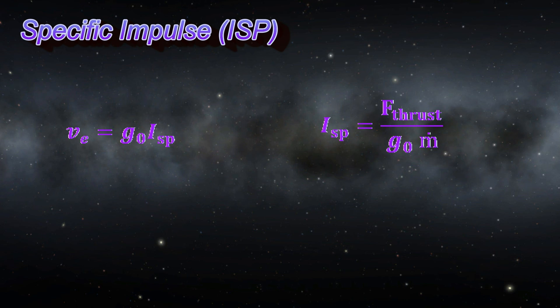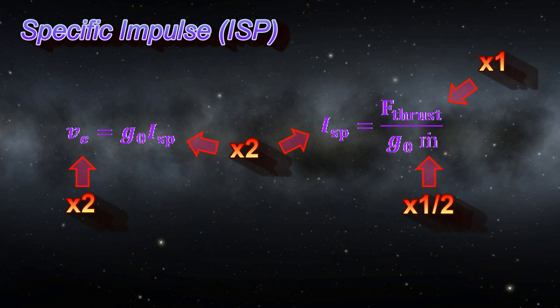The second equation is our triumvirate of ISP being proportional to the thrust and inversely proportional to the mass flow rate, or fuel consumption. So if our thrust is being kept the same but we double our exhaust velocity, we double the ISP, and that in turn will halve our fuel consumption. Okay, enough review. Get it? Got it? Good.